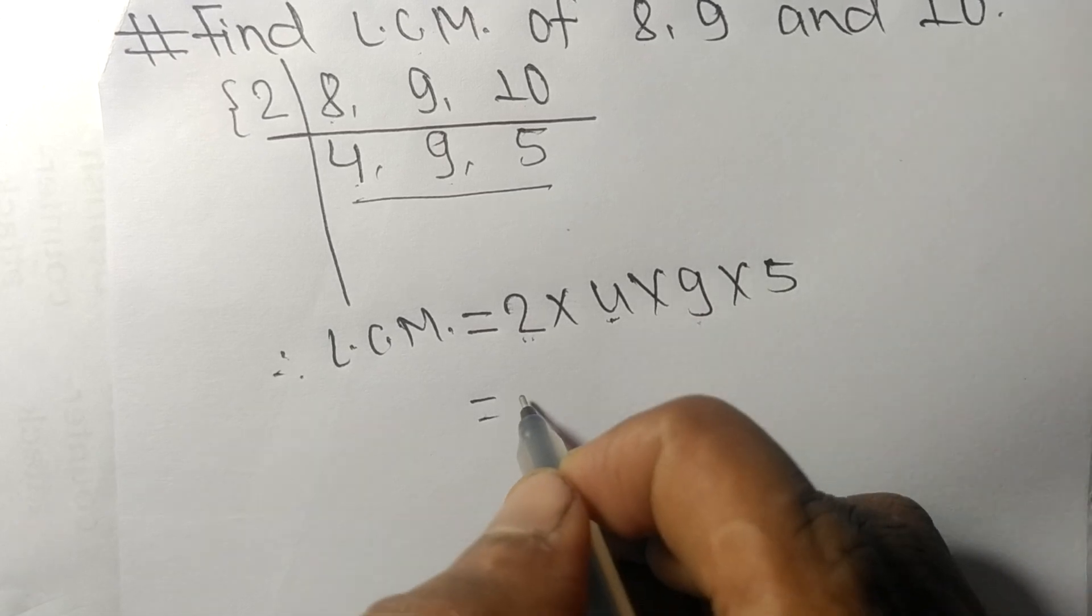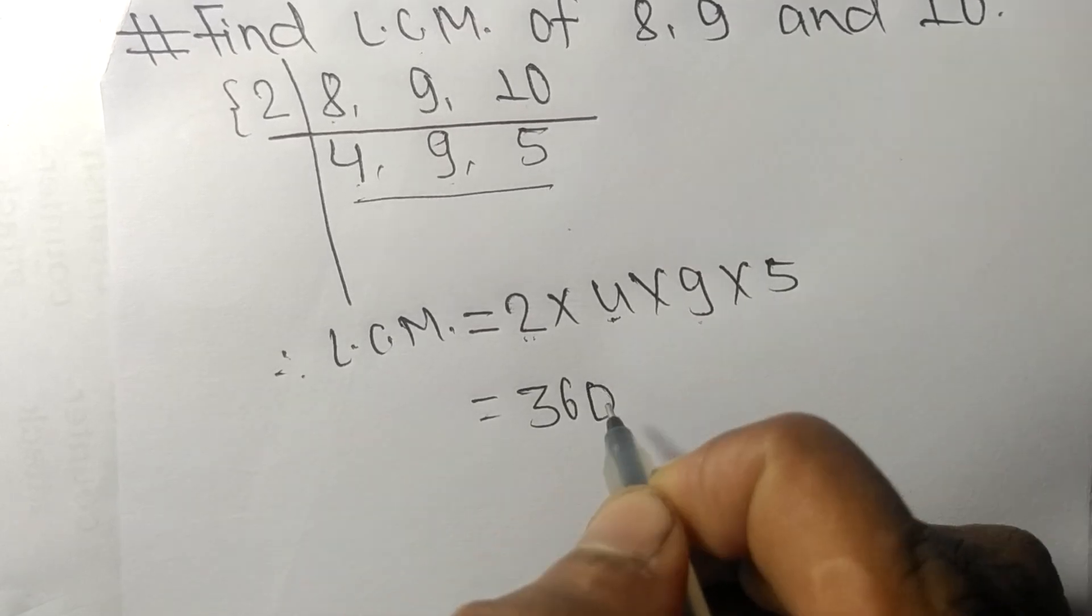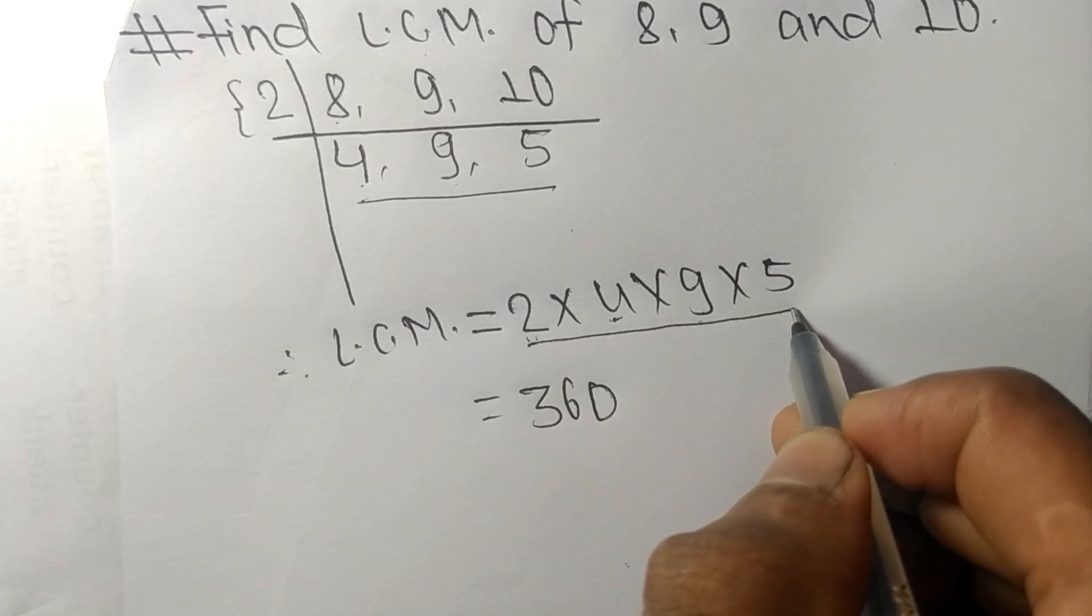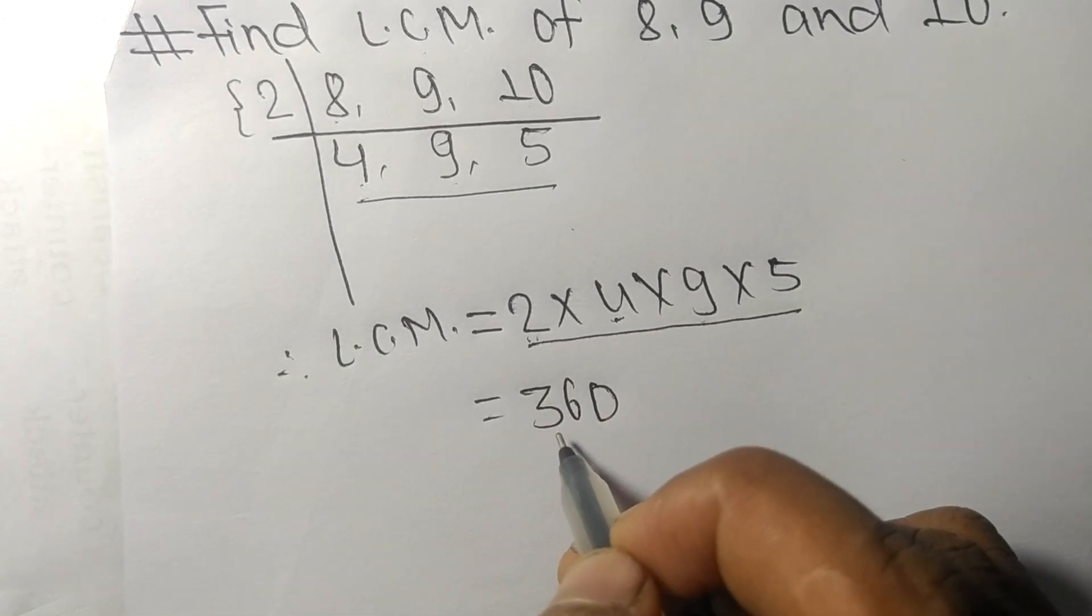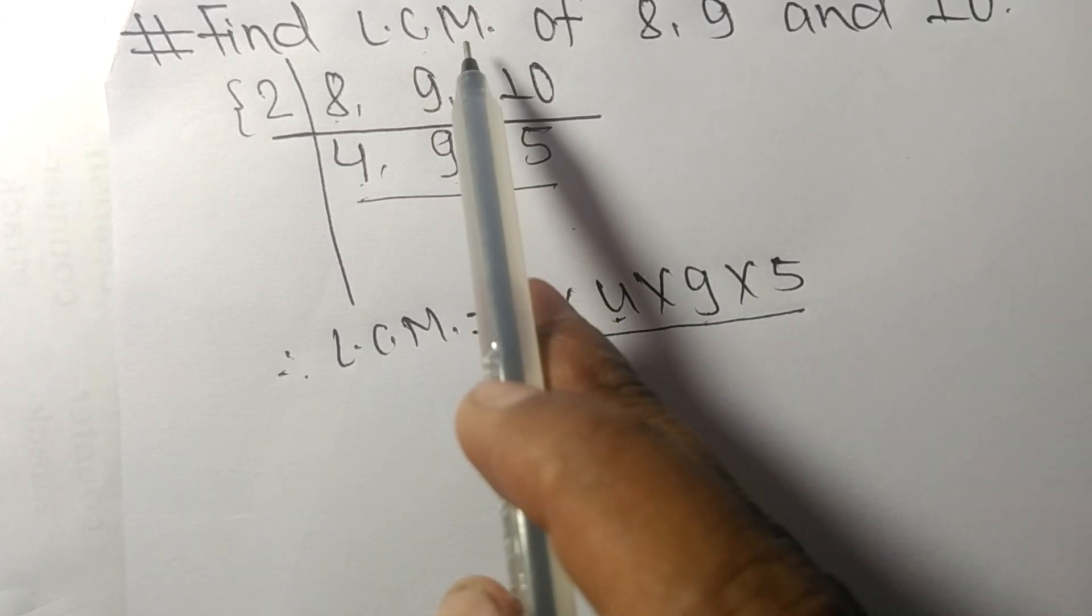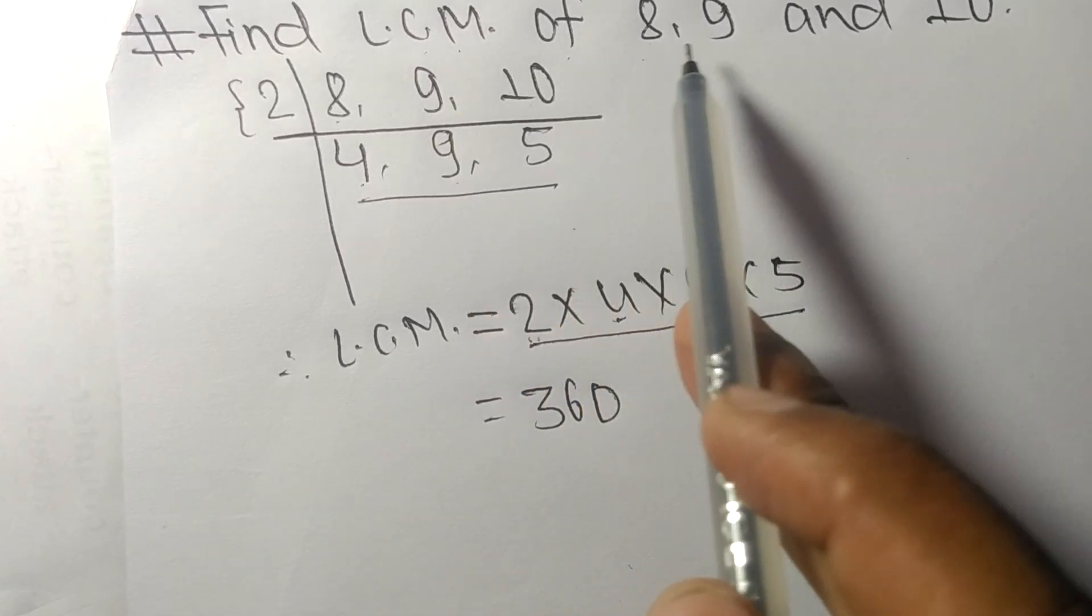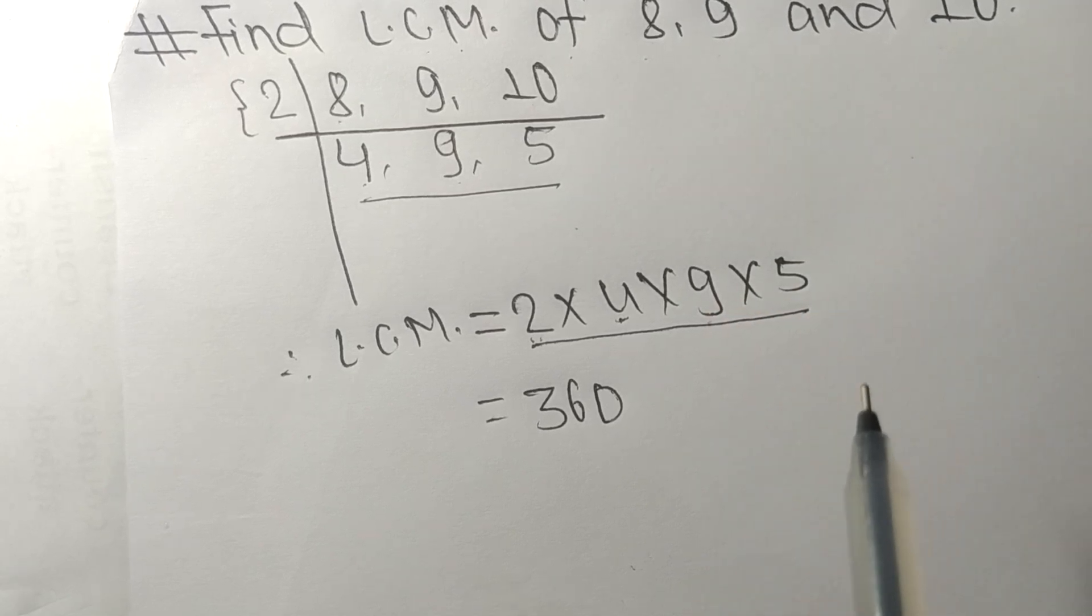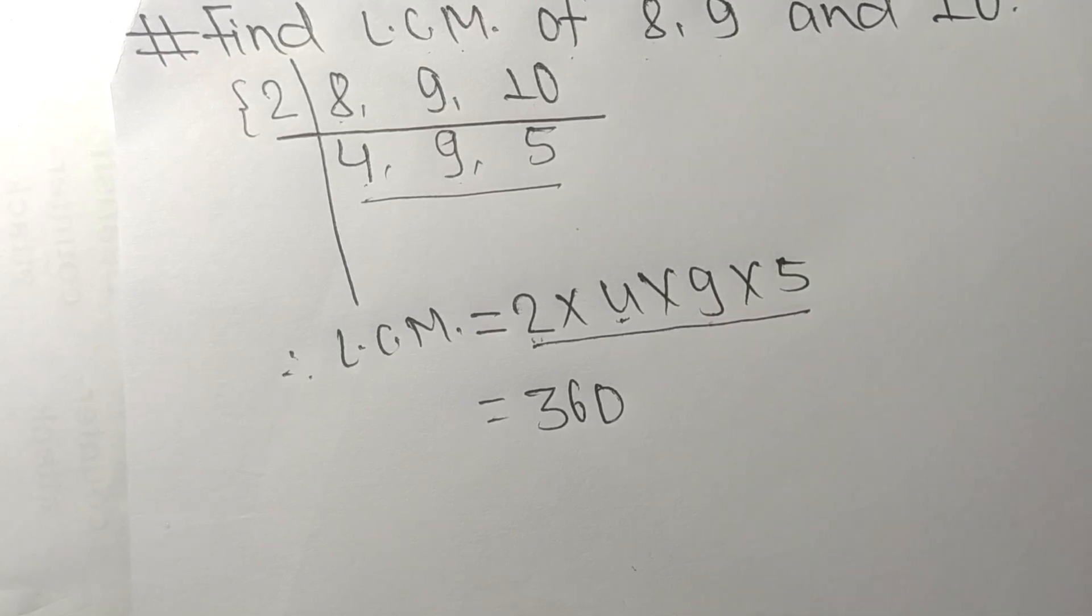So by multiplying all these numbers we got 360, so 360 is the LCM of 8, 9, and 10. So this much for today and thanks for watching.